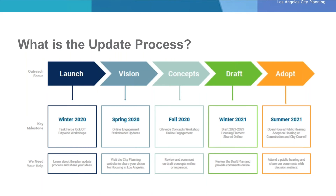Here we lay out a timeline for achieving key milestones starting this winter through adoption in the summer of 2021. There are many opportunities throughout the update process to provide feedback and help shape the city's vision and plan for housing. We are currently in the vision phase of outreach. Our next phase in the fall will include concepts for the plan, followed by release of the draft plan in winter 2021 and adoption in summer 2021.